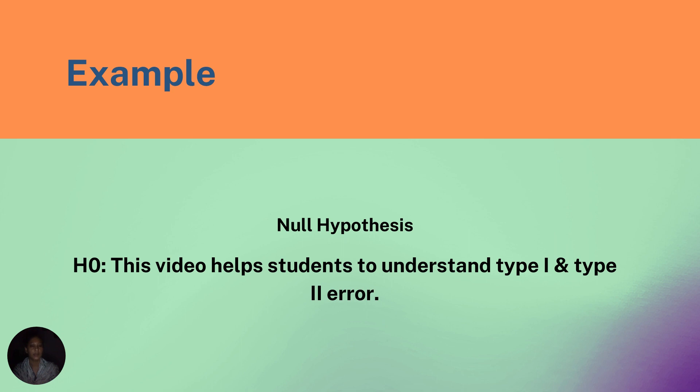And if this null hypothesis is false and my test results support this null hypothesis, that means I will accept this null hypothesis, and I am making a type II error, which is the beta error.